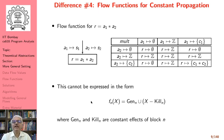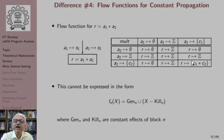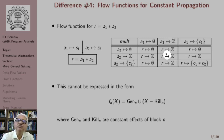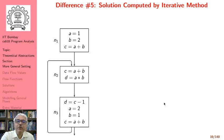Difference number 4 is that our data flow functions are defined slightly differently. If we have r = a1 cross a2, and both a1 and a2 are known to be constants, then r maps to their product. Otherwise, if any one of them is Z (has multiple values), we say r could have multiple values. Similarly, if any one has an empty value but the other is not multiple values, then we say no value is possible. This cannot be expressed in the standard form of gen union (x minus kill), where gen and kill are constant effects of a block.